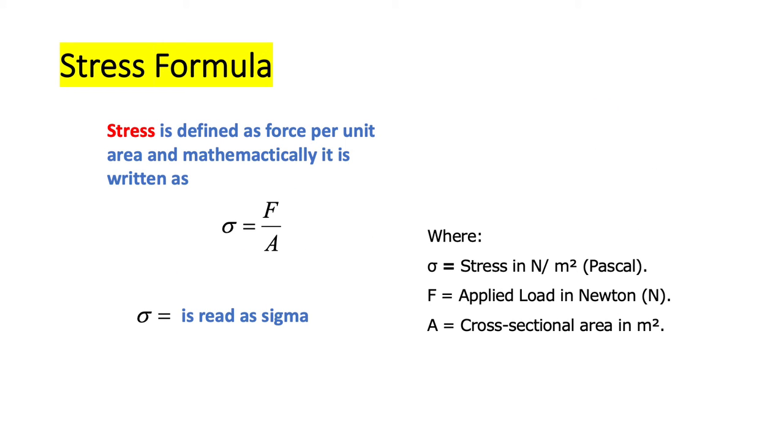As stress is force per unit area, mathematically it is written as sigma equals F over A, where F is the applied load in Newton and A is cross-sectional area of object under load in meter square. Sigma equals stress in Newton per meter square. The other unit for stress is Pascal.